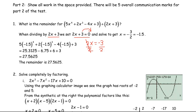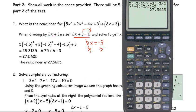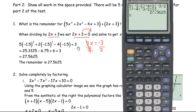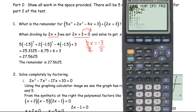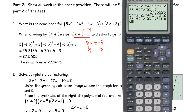That calculation was done on a graphing calculator. If you want the remainder as a fraction, go to the math menu and select number 1 to convert the decimal to a rational number. The value 27.5625 is equivalent to 441 over 16.